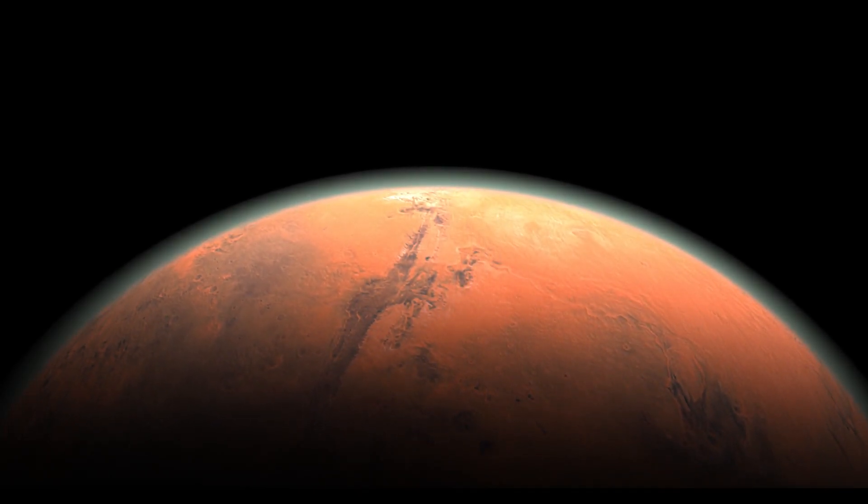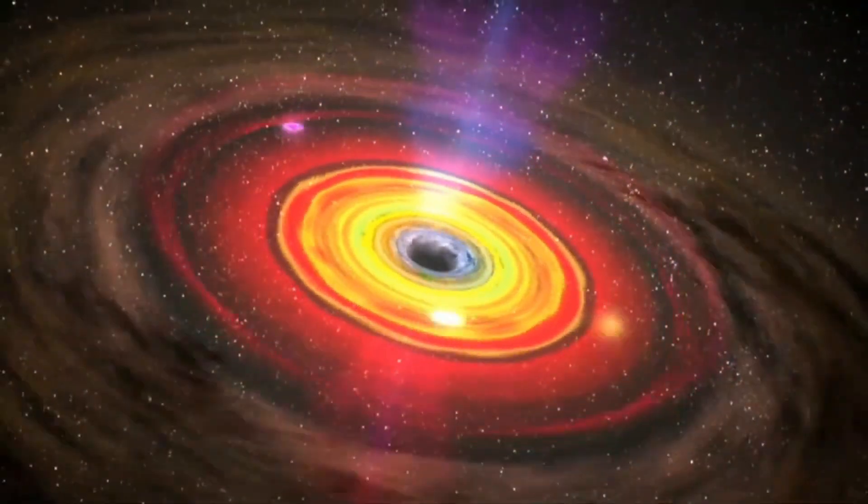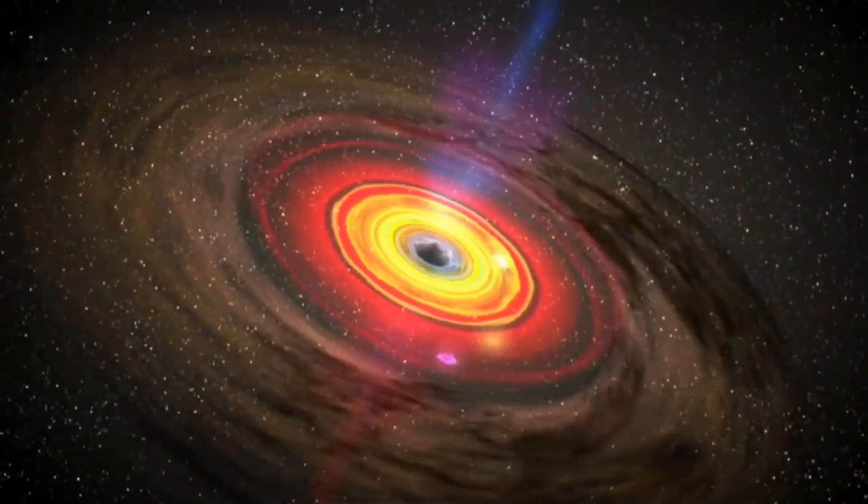Venus is the hottest planet in our solar system, with surface temperatures reaching up to 864 degrees Fahrenheit, 462 degrees Celsius.